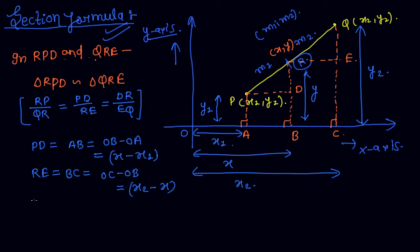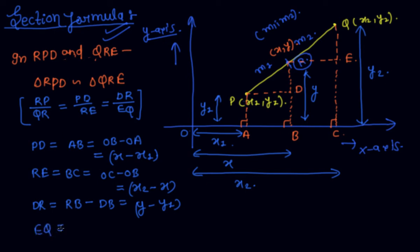Now I find DR. DR = RB minus DB = y minus y1. Again I find EQ. EQ = QC minus EC = y2 minus y.